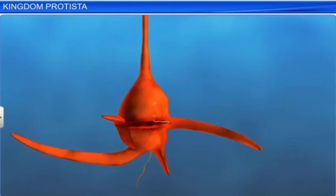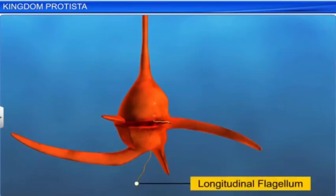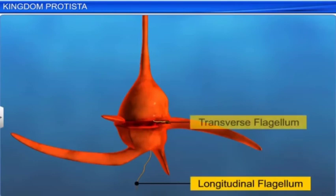Dinoflagellates usually have two flagella: longitudinal flagella and transverse flagella. Their name indicates how both the flagella are positioned.